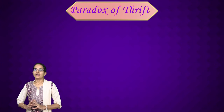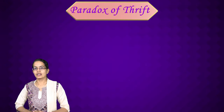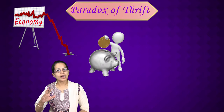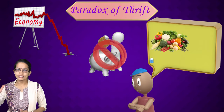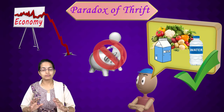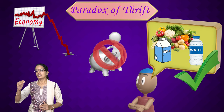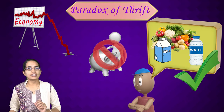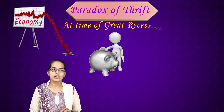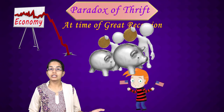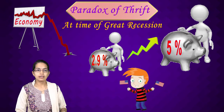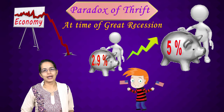Now let's discuss the paradox of thrift — one of the most interesting concepts. During an economic downturn, savings of an individual should ideally cut down, as the person tries to maintain their existing consumption level. But during the Great Recession, it was observed that savings of American individuals increased drastically from 2.9% to 5% — a significant jump. Keynes answered why this happened.